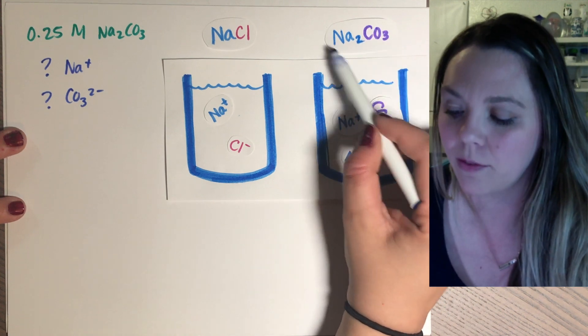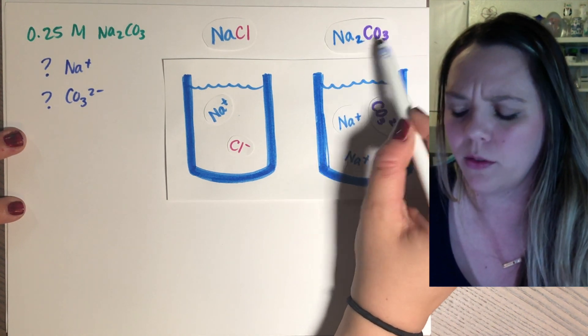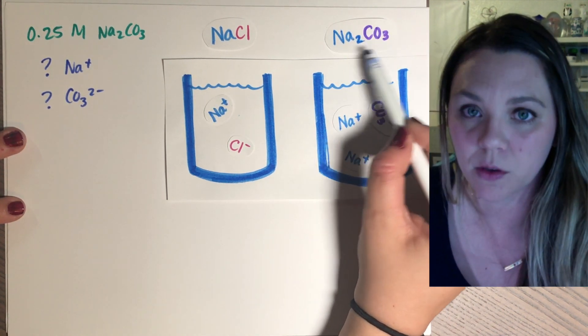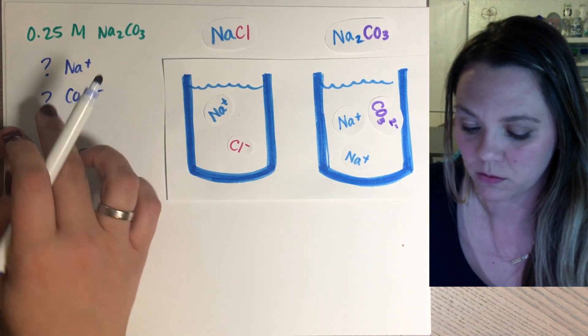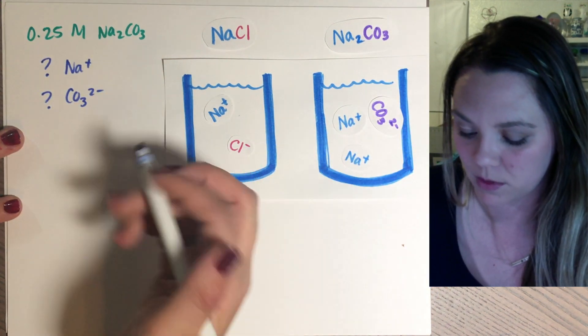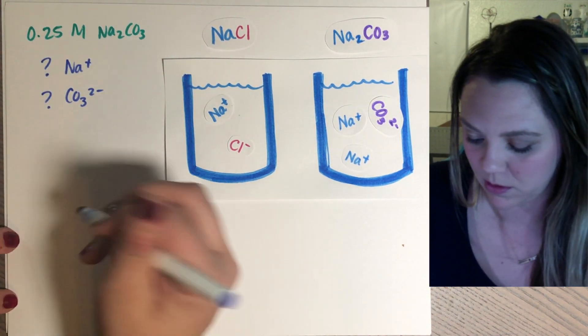Carbonate, for every one molecule, for every one compound of sodium carbonate, there's one carbonate ion. So that molarity is going to be the same. It's going to be, for carbonate, 0.25 molar of Na2CO3.